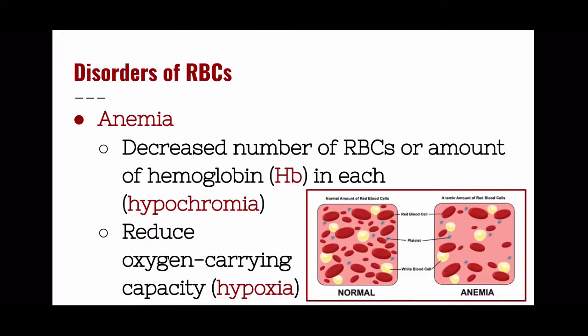Now we can get into some disorders of red blood cells. We're going to look at anemia, which means a deficiency of red blood cells or a deficiency of hemoglobin. Hemoglobin is the protein located inside your red blood cells that makes them appear red in color; it also is the molecule that helps transport oxygen throughout the body. We can abbreviate hemoglobin as Hb. If you are deficient in hemoglobin or red blood cells altogether, your blood is going to appear pale in color — the term for this paleness is hypochromia.